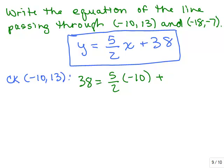I'm sorry, I'm confusing myself. 13 for y and -10 for x. Let's make sure that this is true. So I have (5/2) times -10. It's going to be negative. The 2 cancels the 10 five times, so that'll give me -25 + 38. And is that true? Is 13 equal to -25 + 38? Yes.